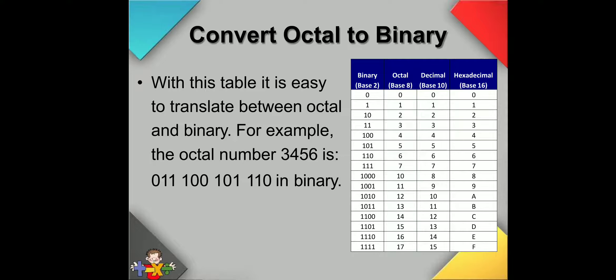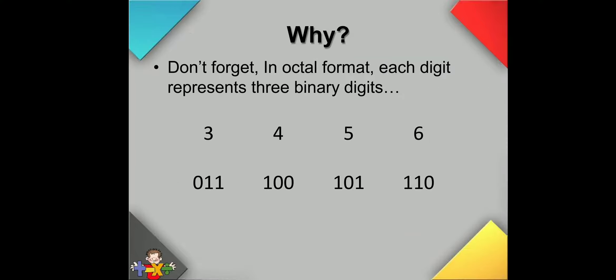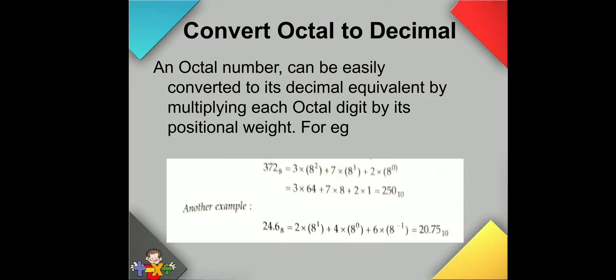In octal number system, remember it is always a group of three binary digits. Here, 3 is represented in binary as 011, 4 is represented as 100, 5 is represented as 101, and 6 is represented as 110. We will always write these numbers in groups of three binary digits, and writing them together gives the binary equivalent.